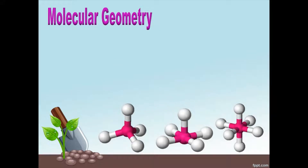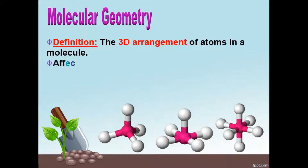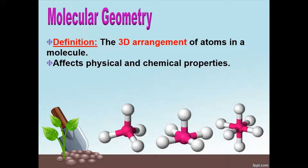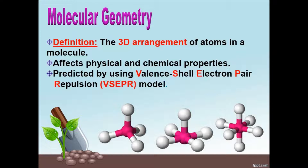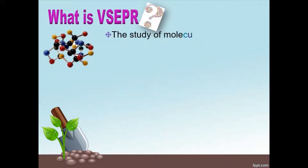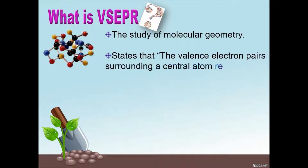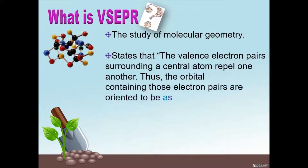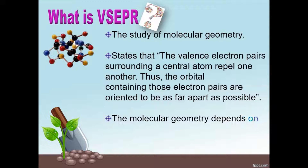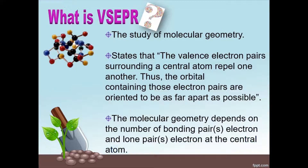Molecular Geometry is the 3D arrangement of atoms in a molecule which will affect physical and chemical properties. We predict the molecular geometry by using the Valence Electron Pair Repulsion Theory. VSEPR Theory states that the valence electron pairs surrounding a central atom repel one another, and thus the orbitals containing those electron pairs are oriented to be as far apart as possible. The molecular geometry depends on the number of bonding pairs and lone pairs at the central atom.